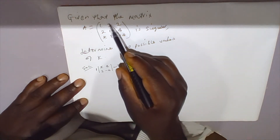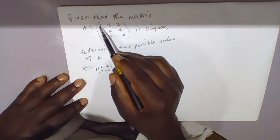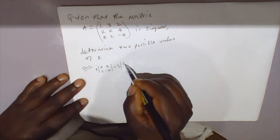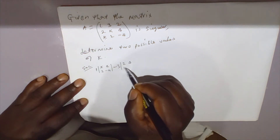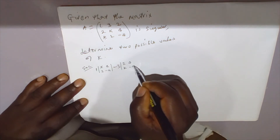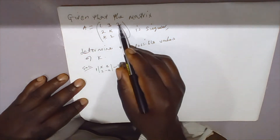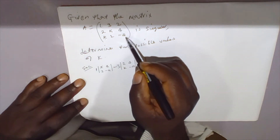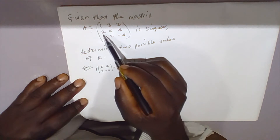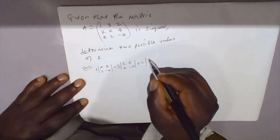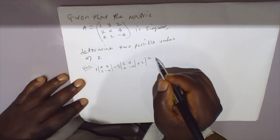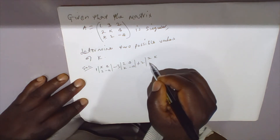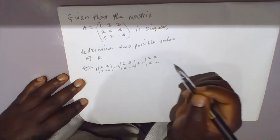We block the next column and row to get submatrix 2, 4 / k, negative 4. Then plus the element 2, blocking that column and row to get the submatrix 2, k / k, 2.